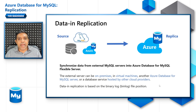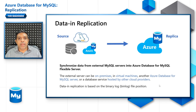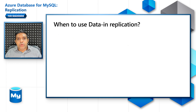Now let's look at what data-in replication means. This feature helps bring data from an on-premises server, another Azure Database for MySQL, or from other cloud providers into Azure. The source server can be on-premises, on a VM, on another Azure Database for MySQL Flexible Server, or a MySQL server running on any other managed PaaS cloud service.